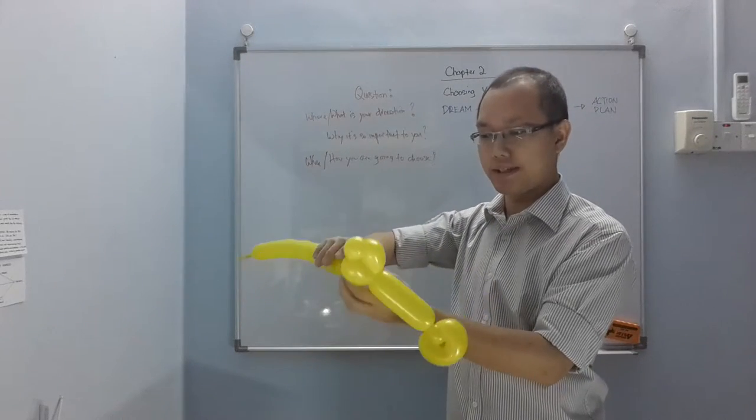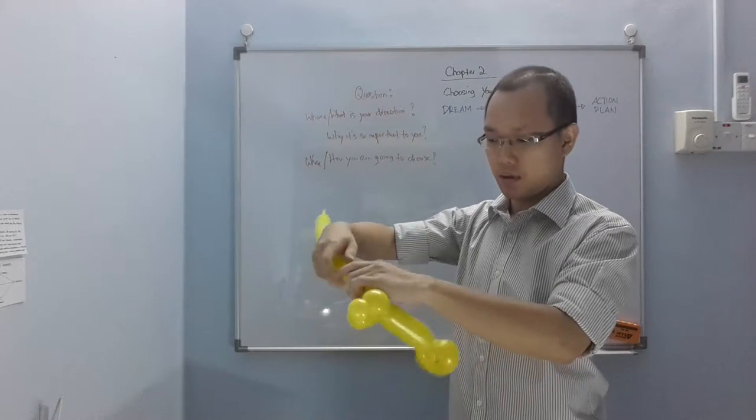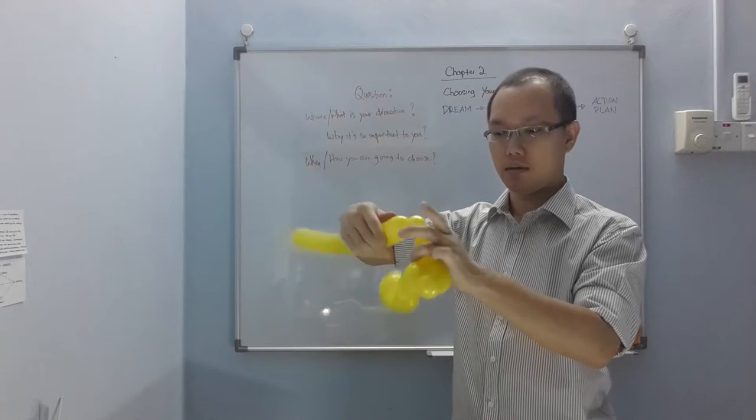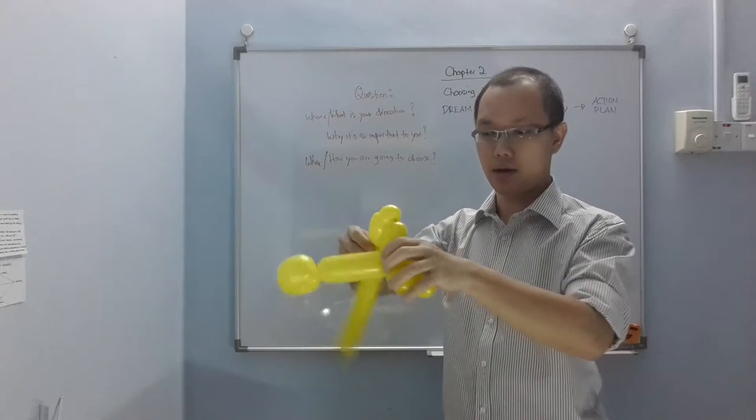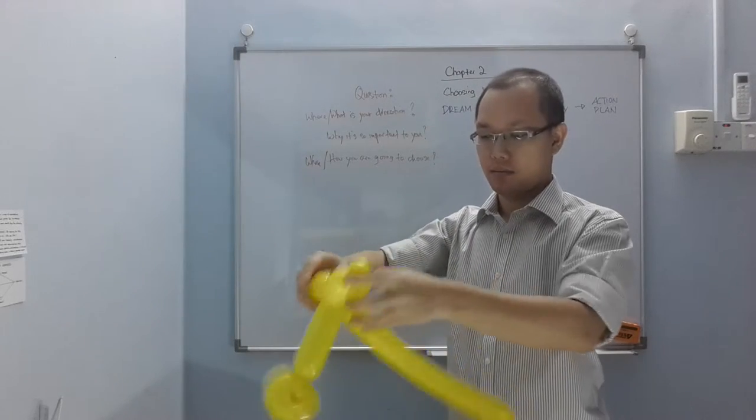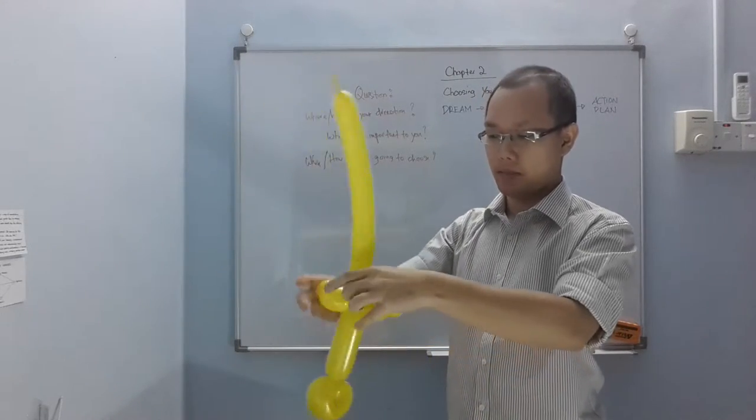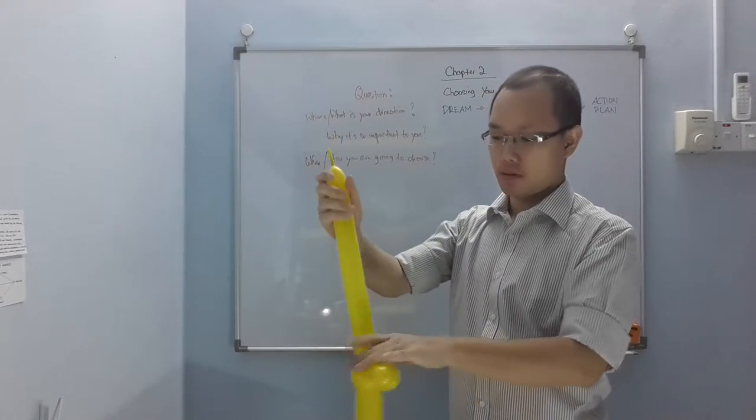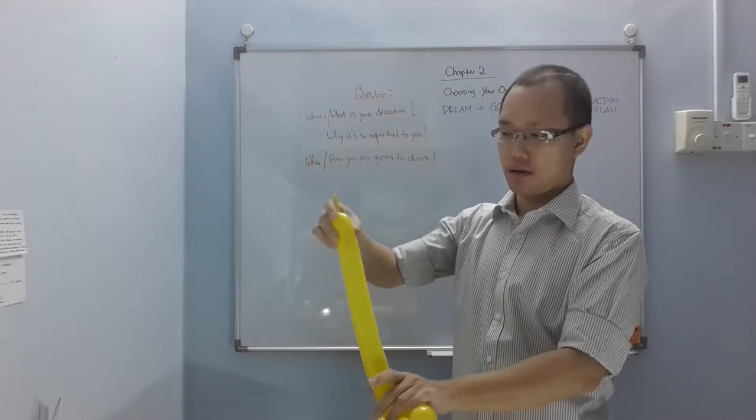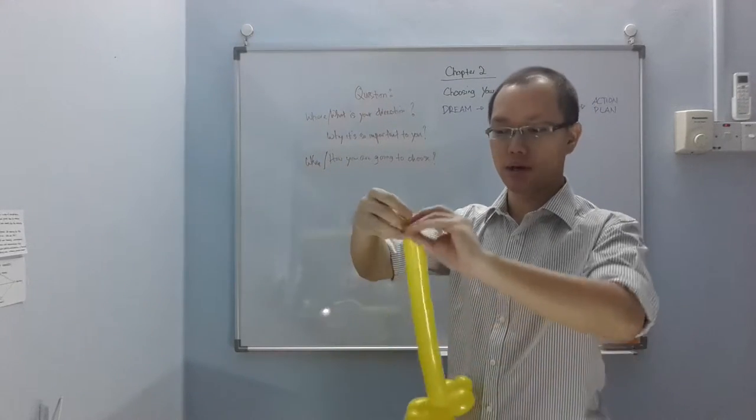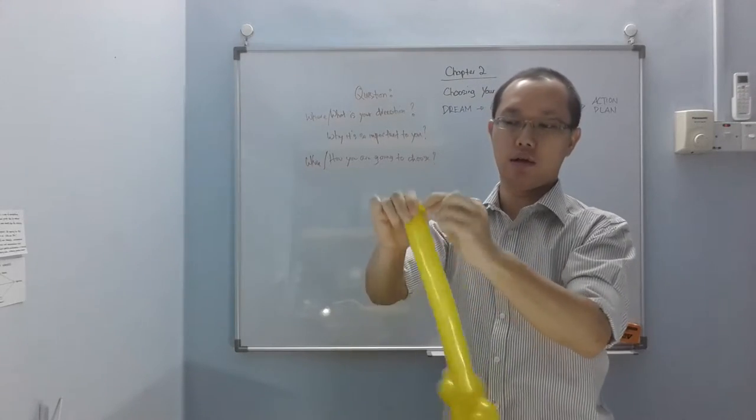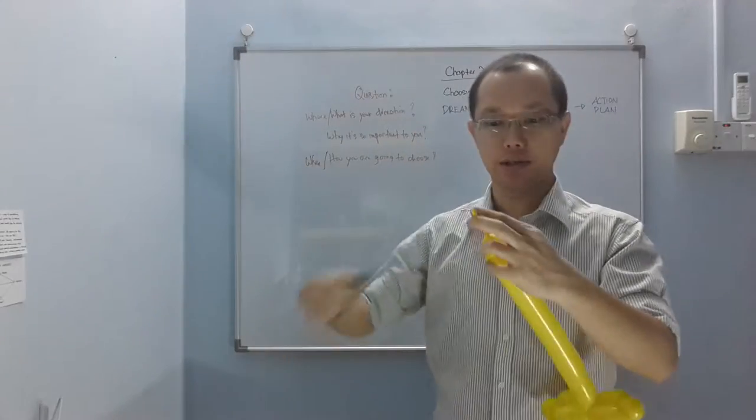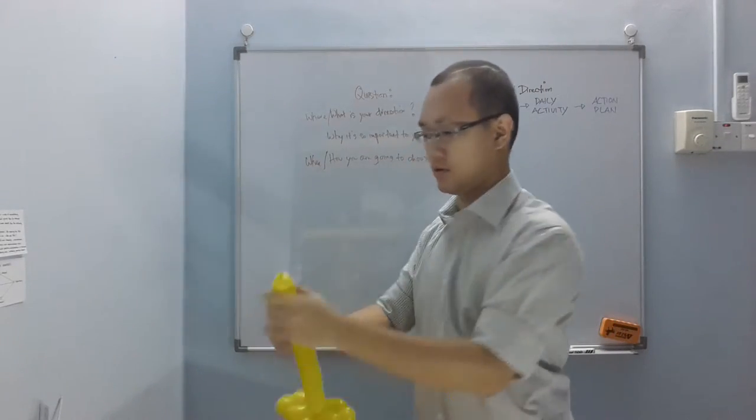Then we're going to do the same thing all over again - two inches, then a bubble, then two inches. Lock it all together again. You can see there's some excess over here, and what you can do is just twist it off, and then you can use scissors to cut it off.